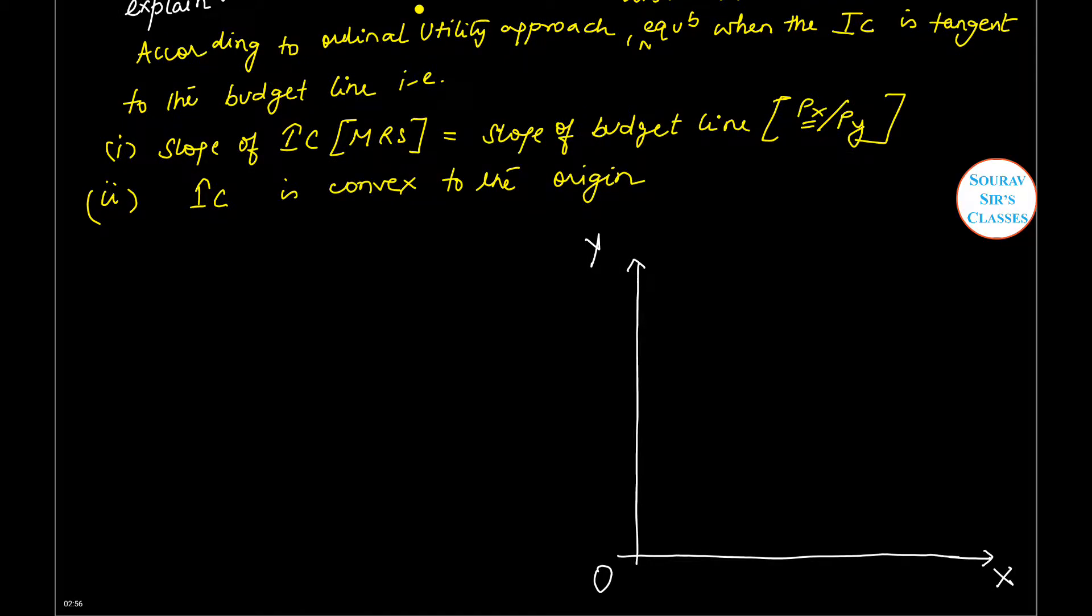We have MRS equals 2, given in the question itself, and Px equals Py equals 2. So MRS equals 2, but Px/Py equals 2/2, which equals 1. So these two things are not equal.